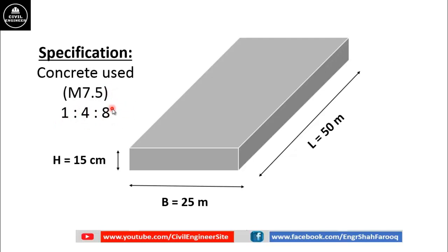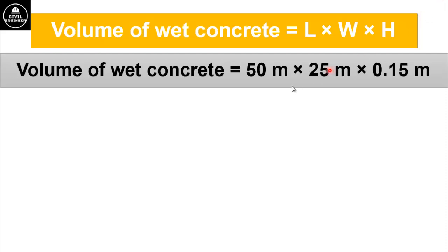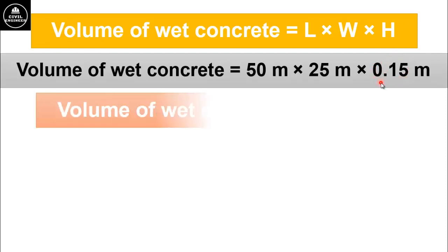A detailed video about grades of concrete is already uploaded in this channel. You can watch that video by clicking this icon or visiting the link given in the description box. Now to calculate the quantity of materials required for this slab, first we will calculate the volume of wet concrete. Volume of wet concrete will be equal to length multiplied by width multiplied by height. Length is 50 meters, width is 25 meters and thickness is 15 centimeters, which equals 0.15 meters. By doing simple calculation, we get volume of wet concrete as 187.5 cubic meters.